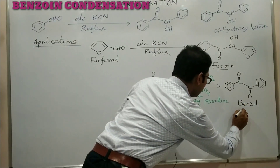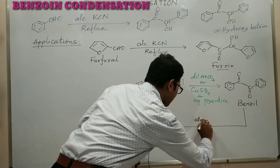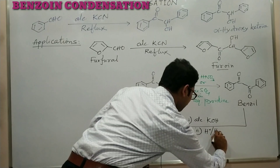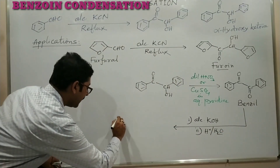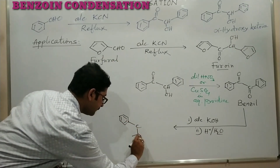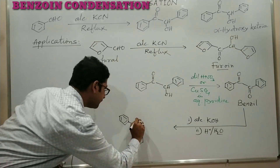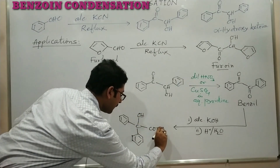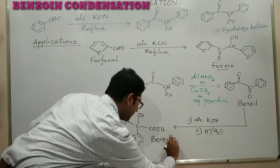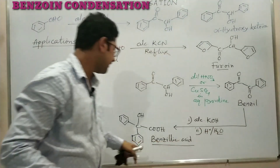If we treat benzyl with alcoholic potassium hydroxide followed by hydrolysis in acidic medium, we obtain benzylic acid. This reaction is known as the benzyl-benzylic acid rearrangement.